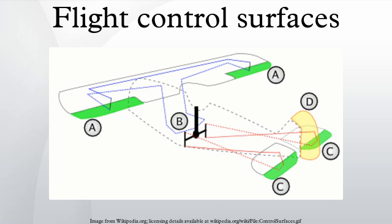When moving the stick to the left to bank the wings, adverse yaw moves the nose of the aircraft to the right.